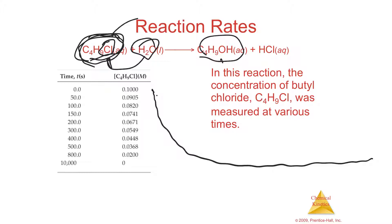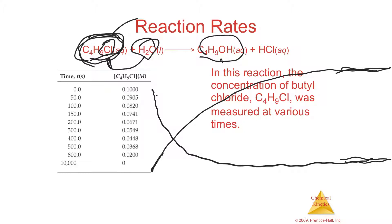At the same time, butyl hydroxide is being made. Where the line eventually becomes flat, the rate is zero. The reaction moves really fast at first, then slower, then not at all. To find the speed, you take concentrations at various times, and those concentrations help you find the rate.